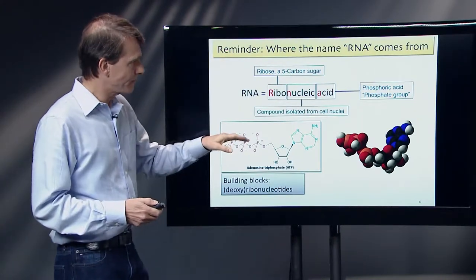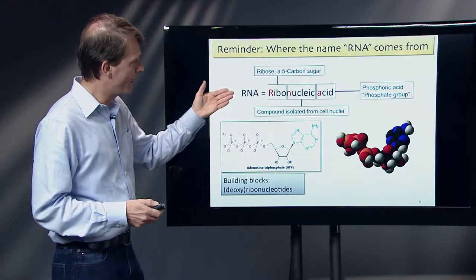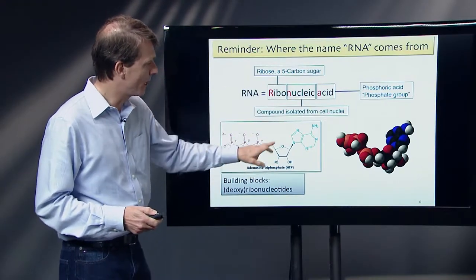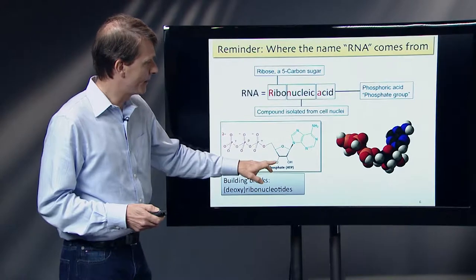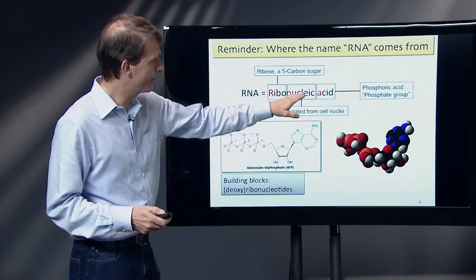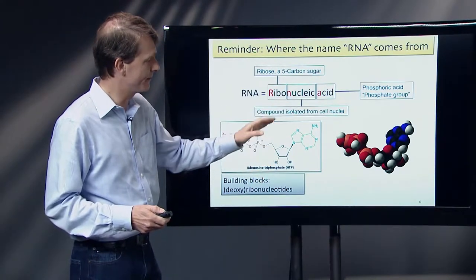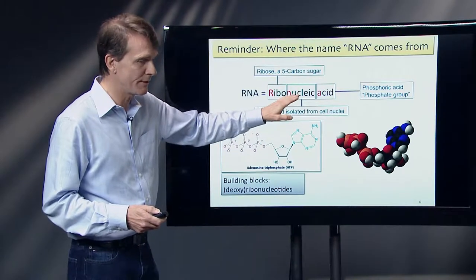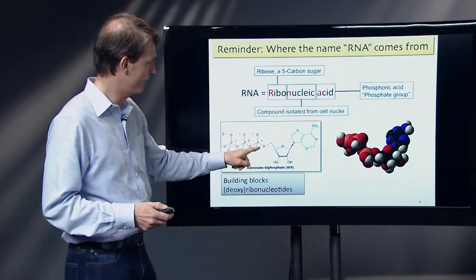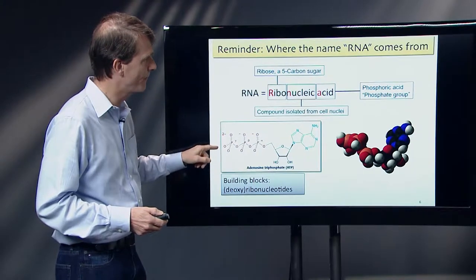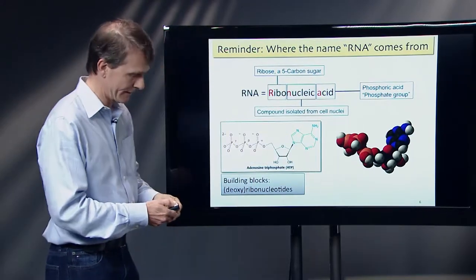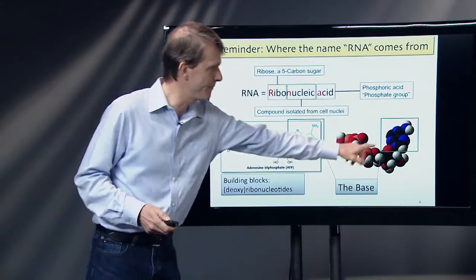The name RNA comes from ribonucleic acid — ribose is the sugar that is part of the backbone, 'nucleic' because it's a material isolated from the nucleus, and 'acid' because it has these phosphate groups. The molecular structure looks approximately like this, and the business end of all of this is the base.